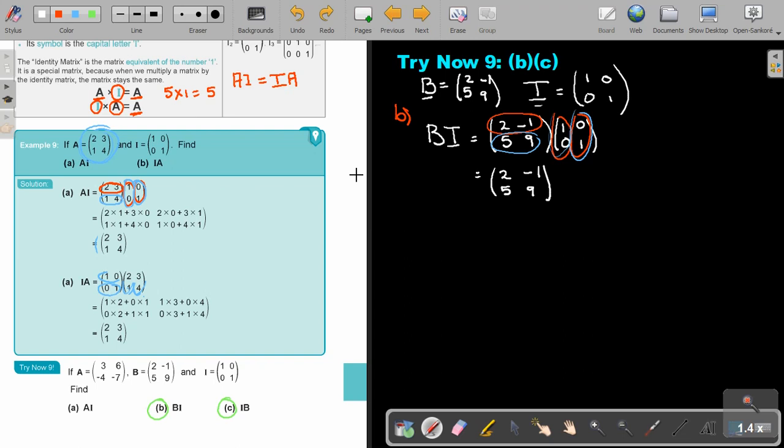And then the final one, number C. Now it's just the opposite. So now it's IB. So what's I? So it's 1, 0, 0, 1. By B, 2, 5, negative 1, 9.